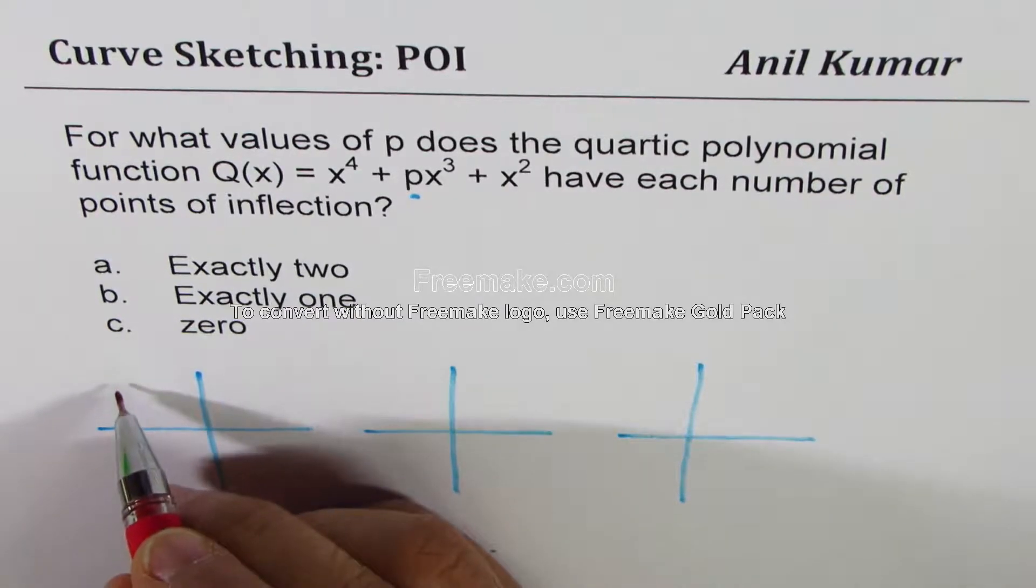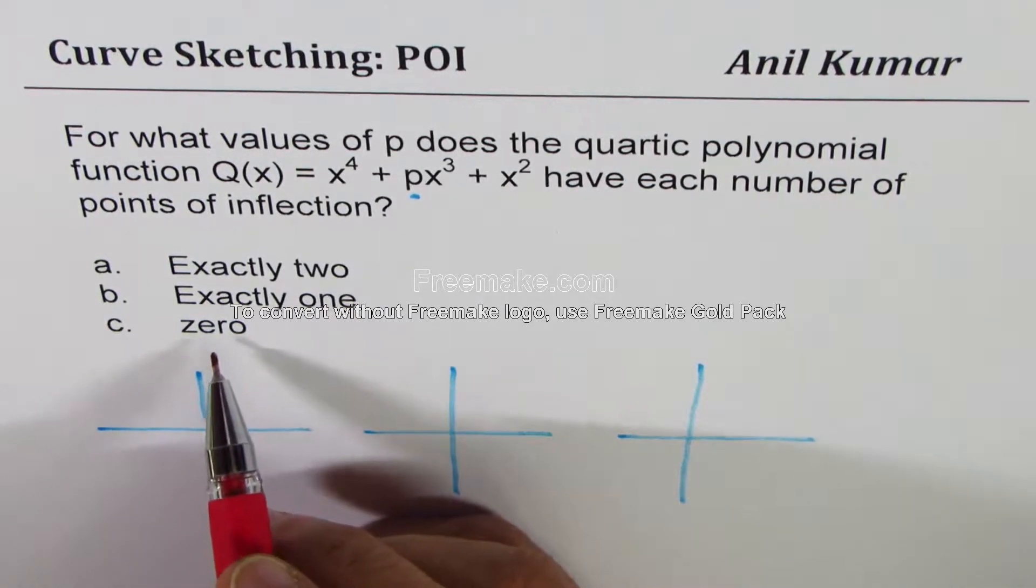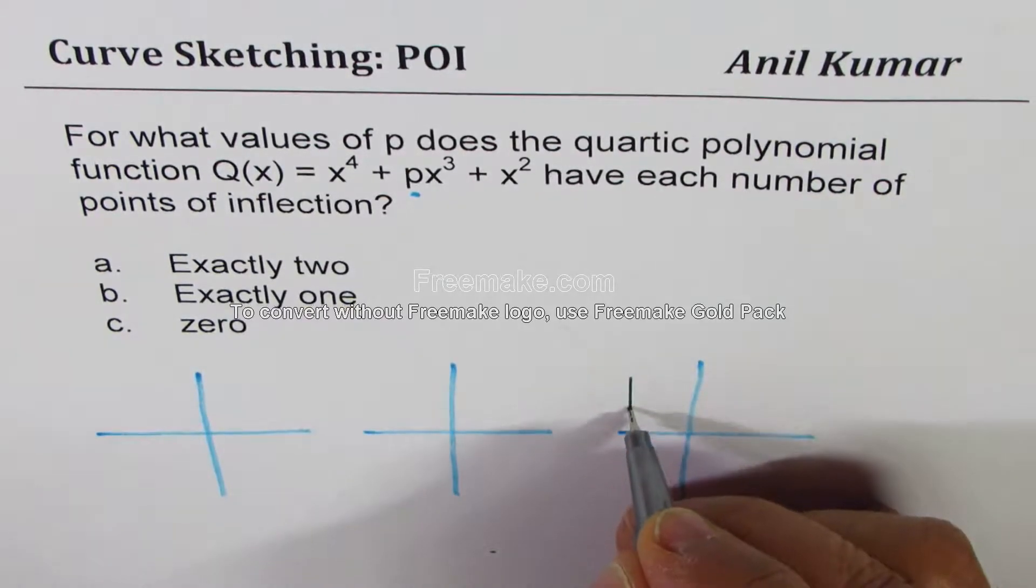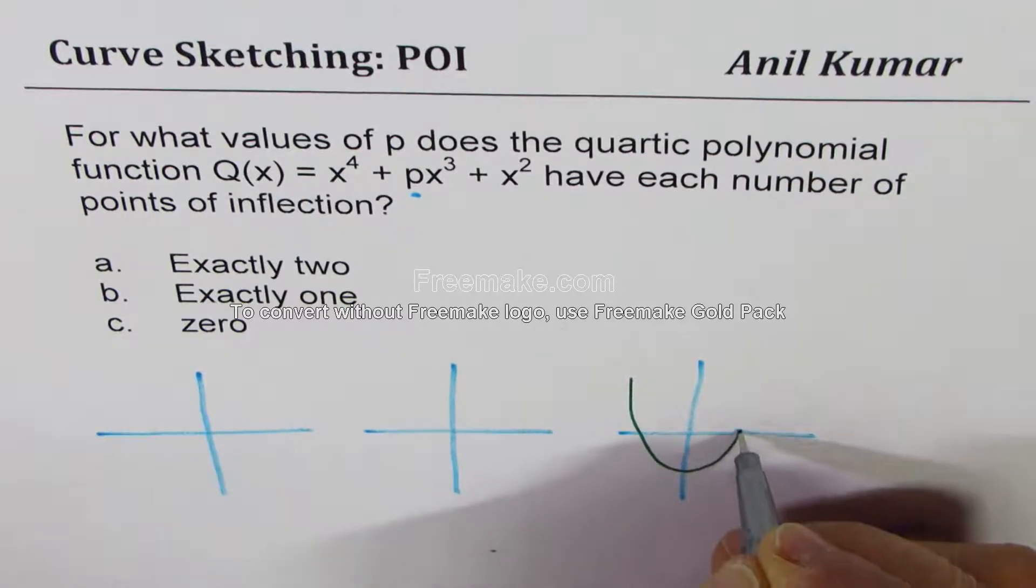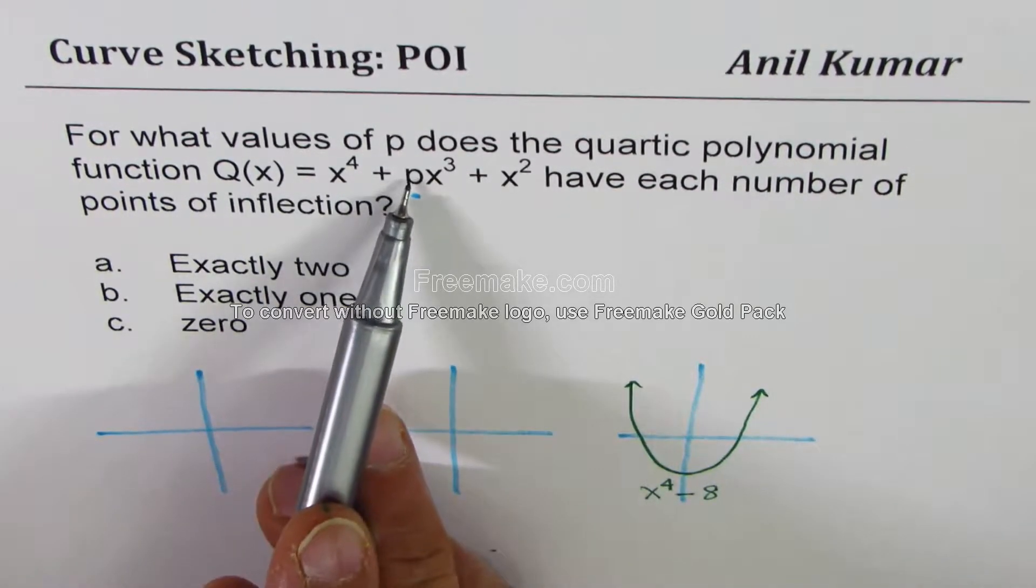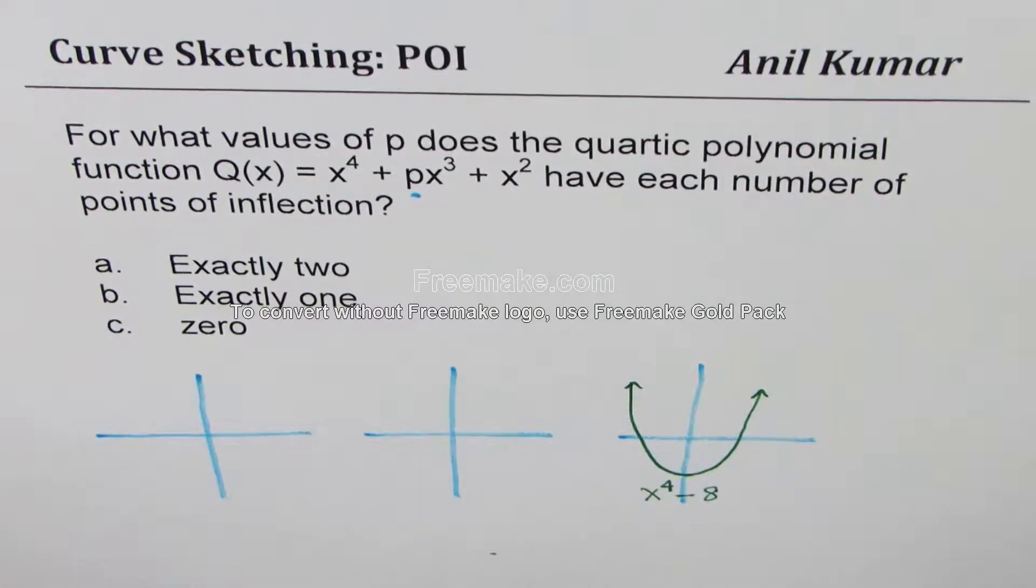A quartic function could be drawn kind of like this. Let's begin with a quartic function having no point of inflection. Let's sketch it like this. This is like a parabola with a much flatter vertex than x^2. So we could say, for example, this is like x^4 minus something, let's say 8. But it has no point of inflection, just a parabola without any point of inflection.